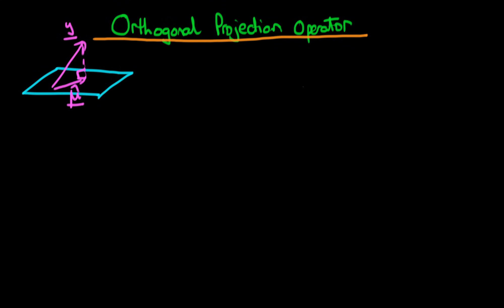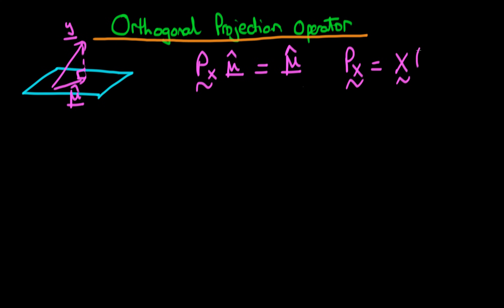In this video we're going to continue our discussion of the orthogonal projection operator. Remember at the end of the last video, what we were trying to prove was that if we operate on a vector which already lies in the column space of X — for example μ̂, because we know μ̂ has to lie in the column space of X — then the orthogonal projection operator applied to that vector should just return that vector. Our orthogonal projection operator P(X) was found in the last video to equal X(X'X)⁻¹X'.